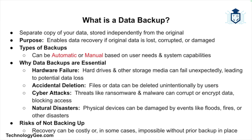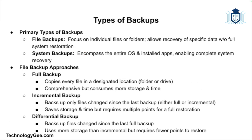When it comes to backups, there are two primary types: file backups and system backups. A file backup is a copy of specific files or folders that are important to you, allowing you to recover individual pieces of data like documents, photos, or project files without restoring the entire system. The first approach is a full backup, where every file in a designated folder or drive is copied regardless of whether it has changed. This method is the most comprehensive but can take up significant storage space and time.